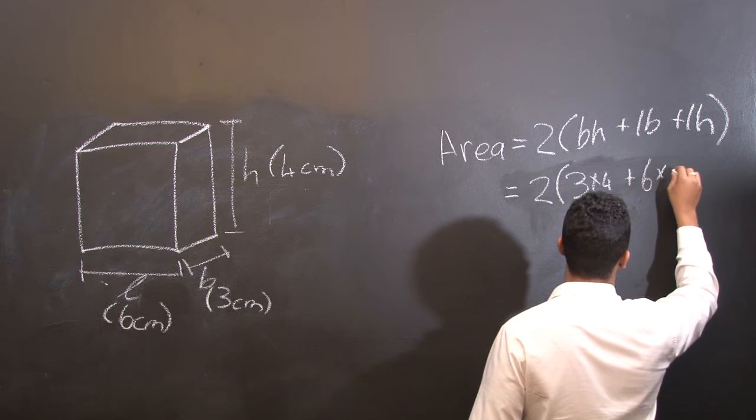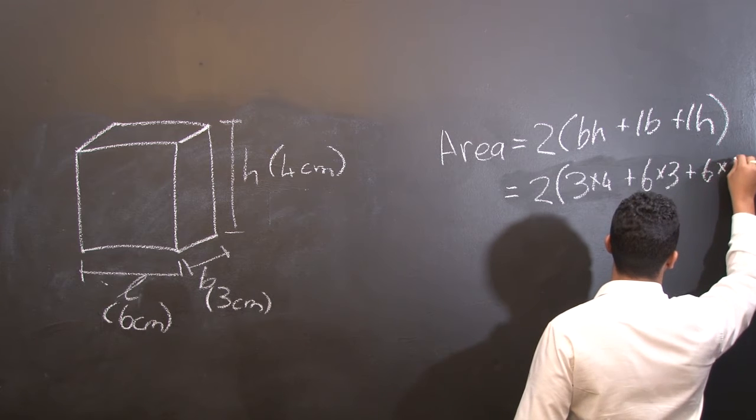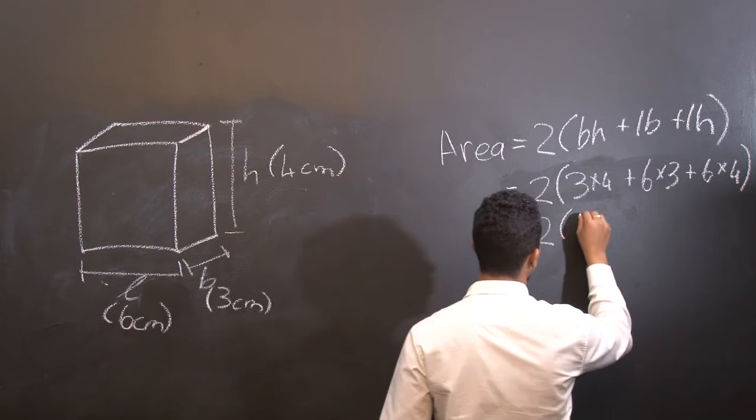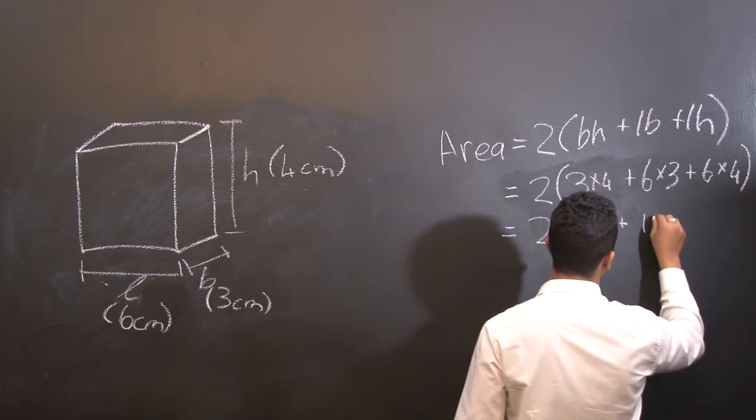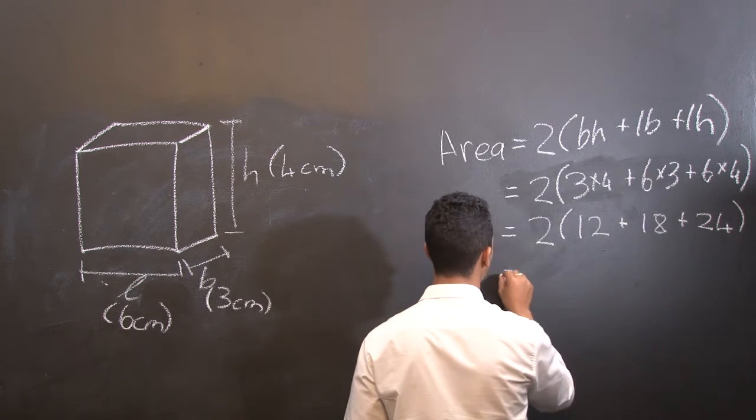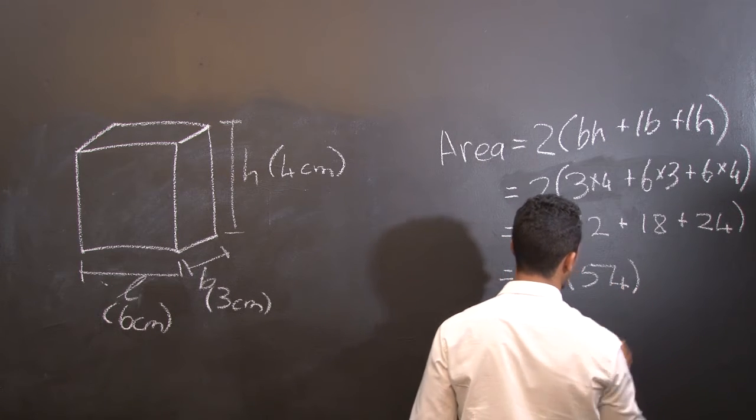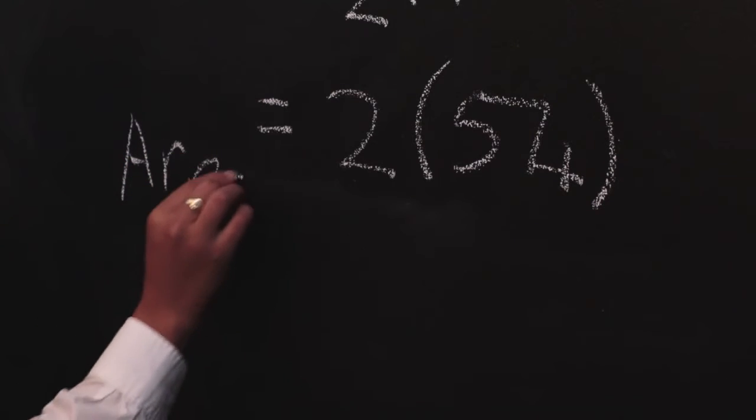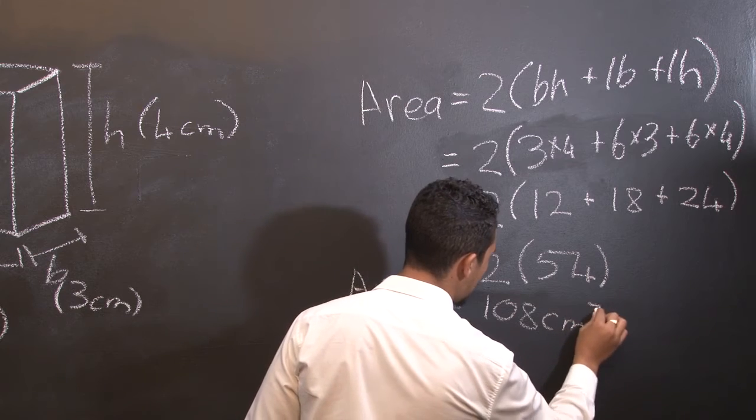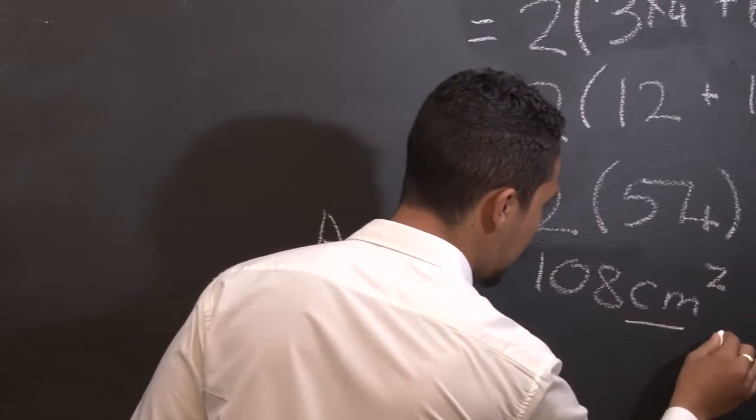Plus length which is 6 times by height which is 4. So this will equal to 2 open bracket, 12 plus 18 plus 24, which will be equal to 2 times 54. This brings us to our final answer, which is area is equal to 108 centimeters squared. Don't forget that area is always calculated in the unit squared.